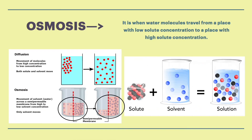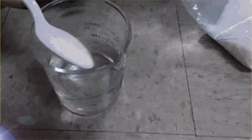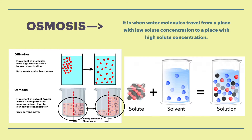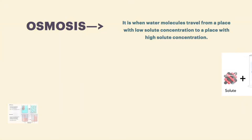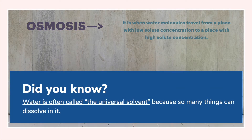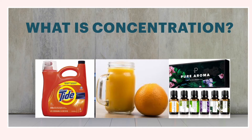Osmosis is when water molecules travel from a place with low solute concentration to a place with high solute concentration. To understand that better, we need to talk about solutes and solvents. A solute is a chemical that can be dissolved in a solvent. Think of sugar — if you put sugar into water and stir it, the sugar dissolves. Chemicals that can do this are called soluble, and sugar and salt are both soluble.